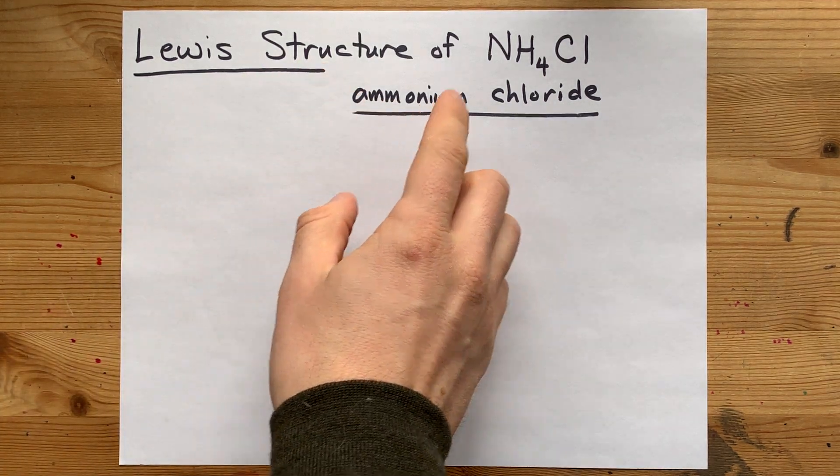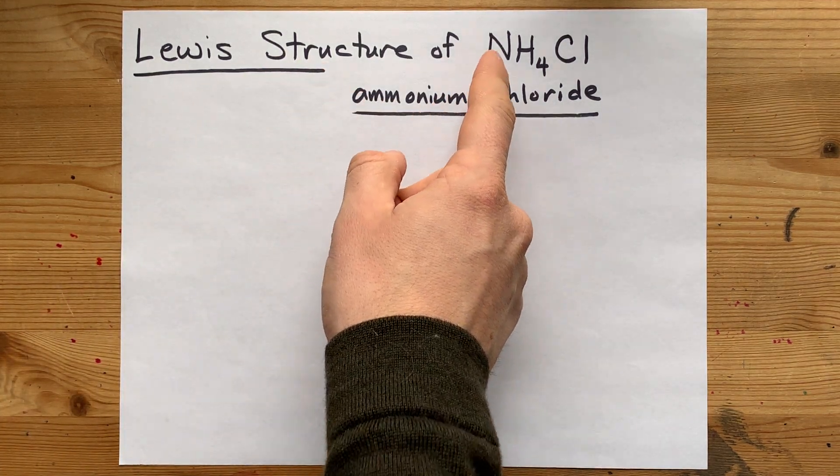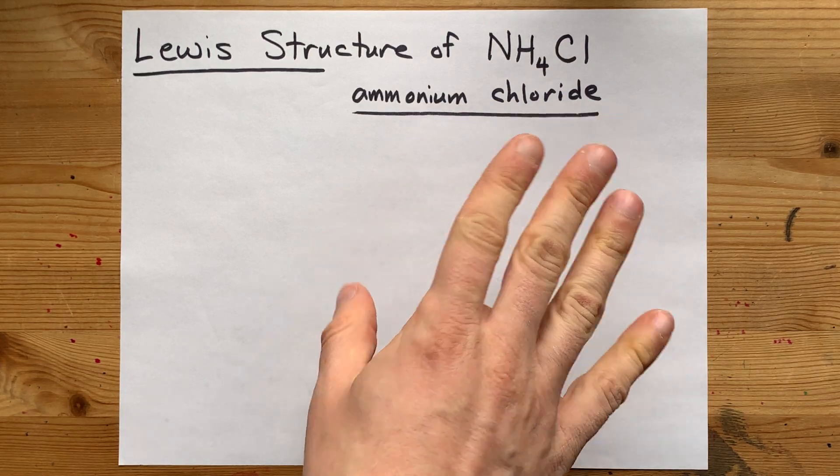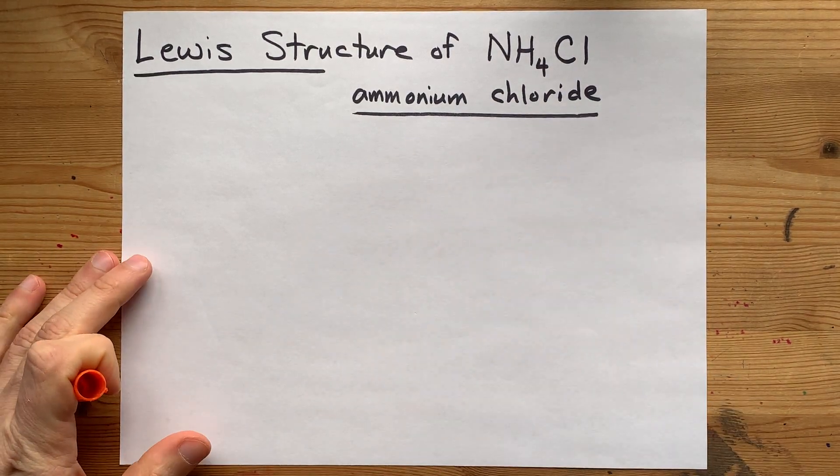The Lewis structure of ammonium chloride, or NH4Cl, is actually a bit challenging if you haven't seen it before.